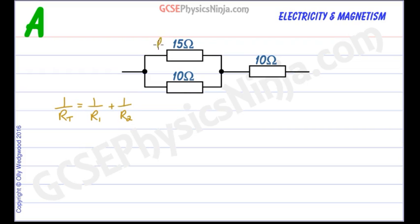So this could be R1 and this could be R2. This formula works for as many resistors in parallel as you like. You just keep adding on resistors like that. But we've only got two today so we'll only use the version with R1 and R2.